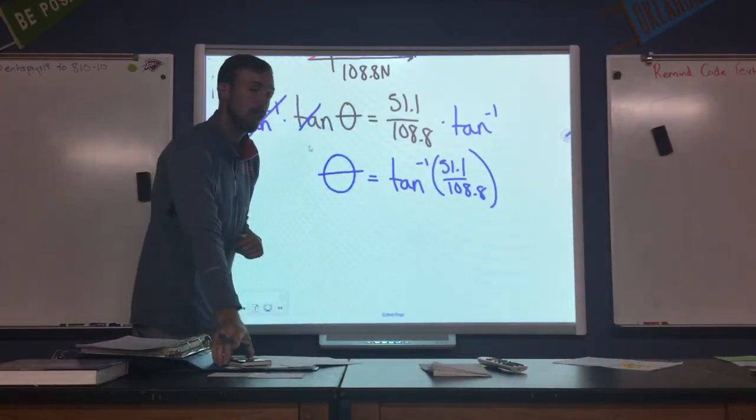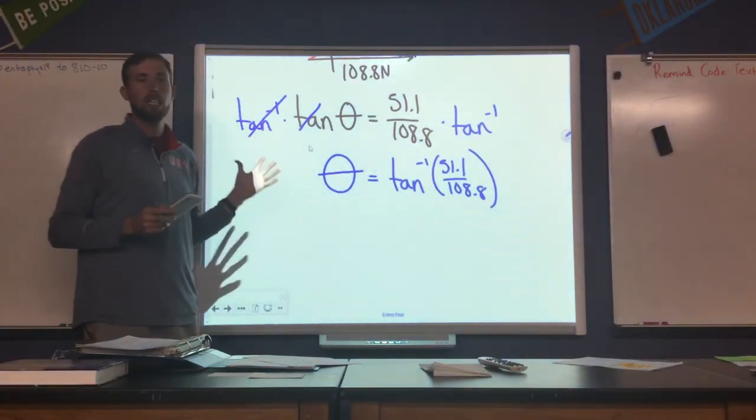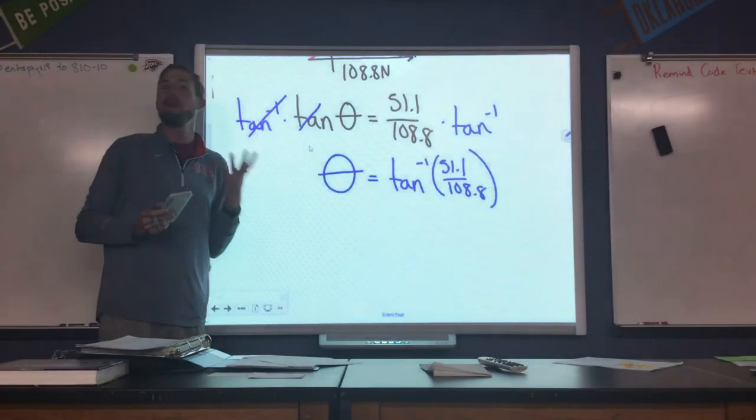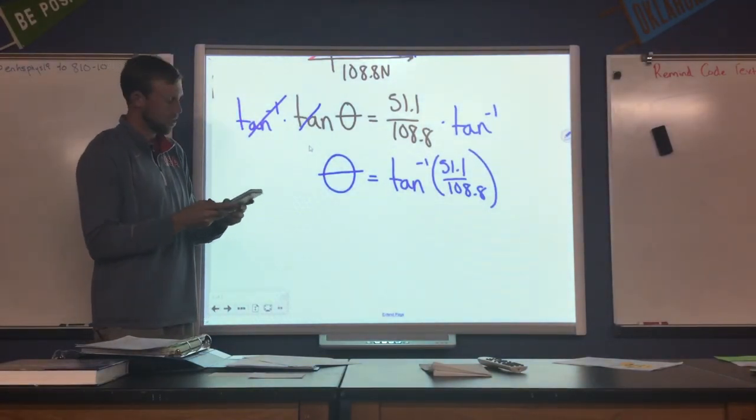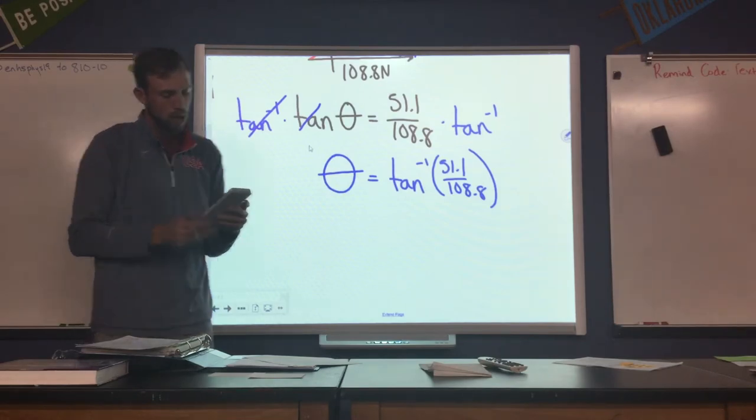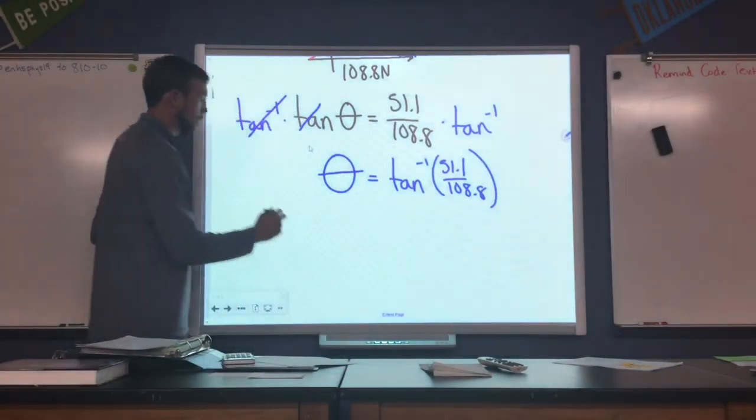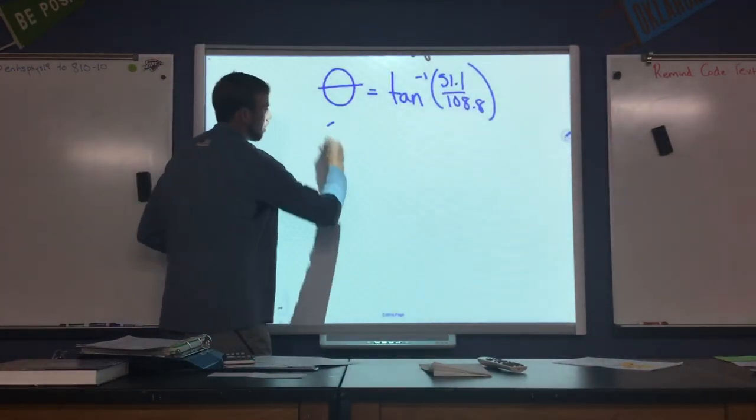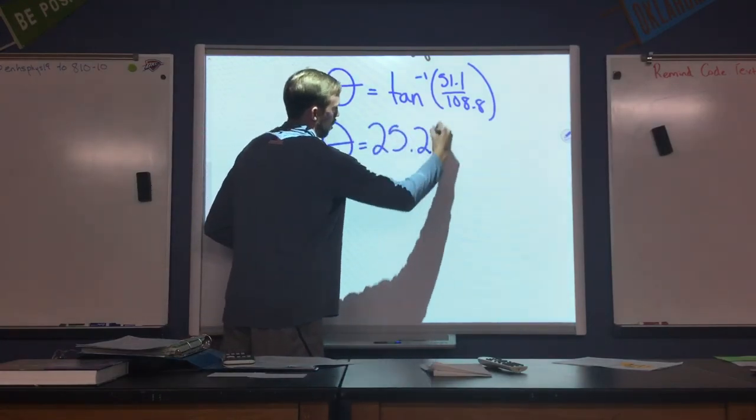So now we're plugging this value into our calculator, making sure we're in degree mode. If you are in radian mode, you are likely going to get a small decimal or maybe a negative value. So second tangent, 51.1 divided by 108.8. I get a value of 25.2, which is exactly what we're looking for. So theta here would be approximately 25.2 degrees.